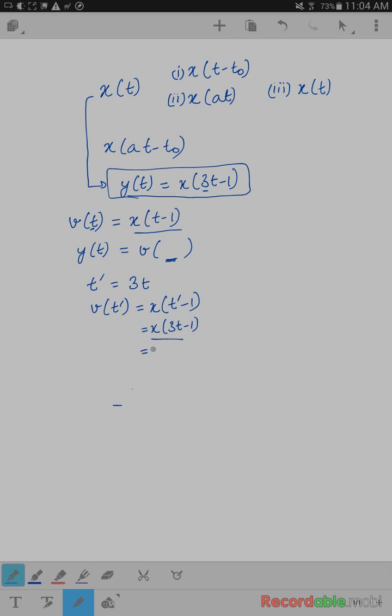So this is equal to y of t, right? And substituting t prime equals to 3t here, this is v of 3t, right? So v of 3t is y of t. So what shows up here is 3t.